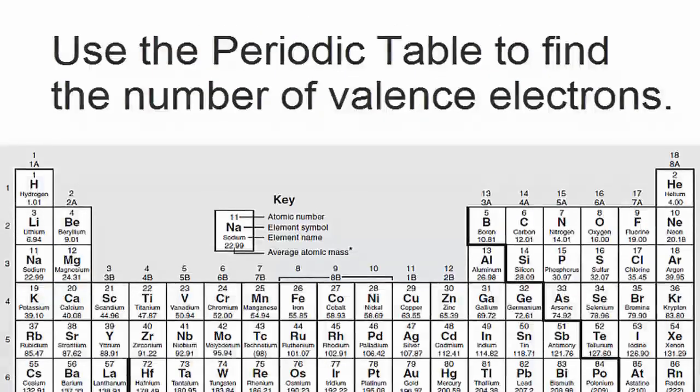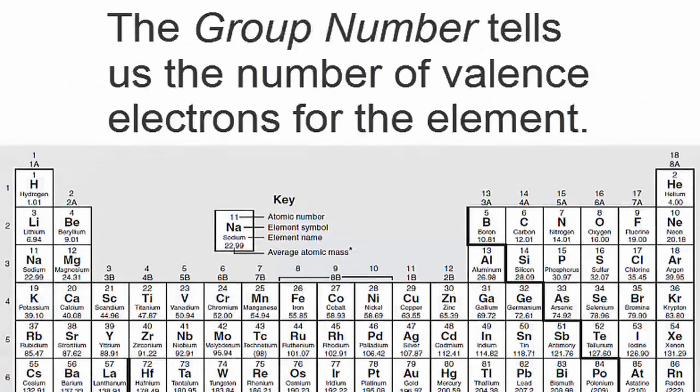We can find the number of valence electrons using the periodic table. The group number tells us the number of valence electrons for the element. For example,